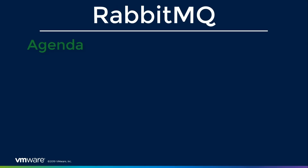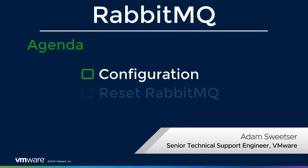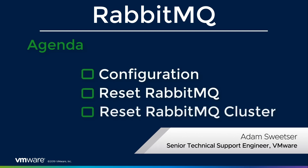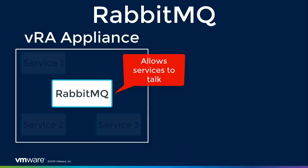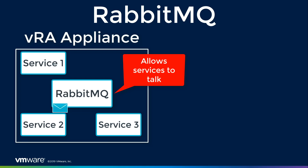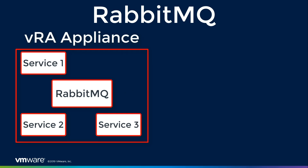Hello everyone. In this video, we'll be diving more into RapidMQ. We briefly mentioned it in our component registry not being available video. RapidMQ is our messaging queue — it's the way the components in our VRA appliance communicate with each other. If RapidMQ is having some kind of issue, then the VRA environment is not working. While we could still get to the management portal, anything with the admin portal or deploying workflows wouldn't work correctly. And if we're noticing some kind of cluster issue, this is a pretty good place to start troubleshooting.